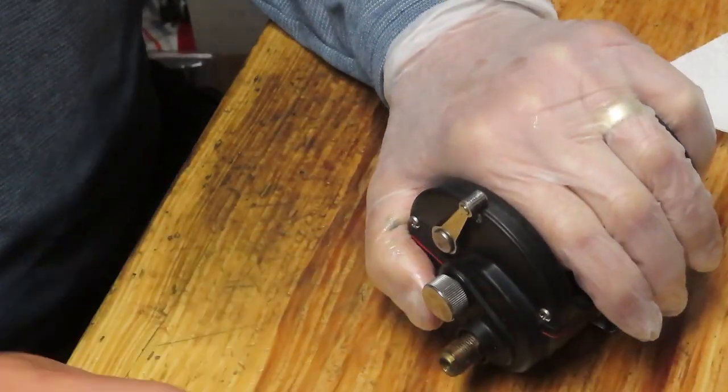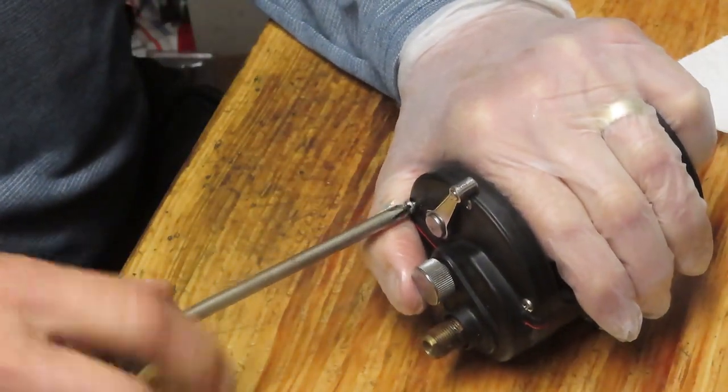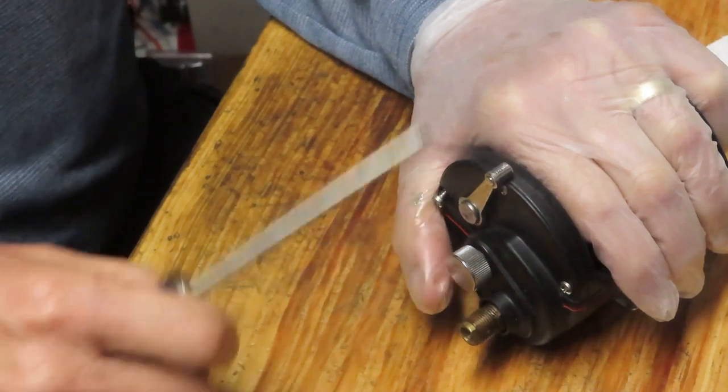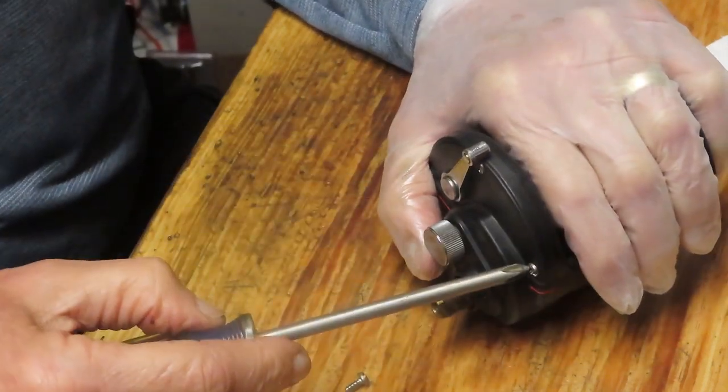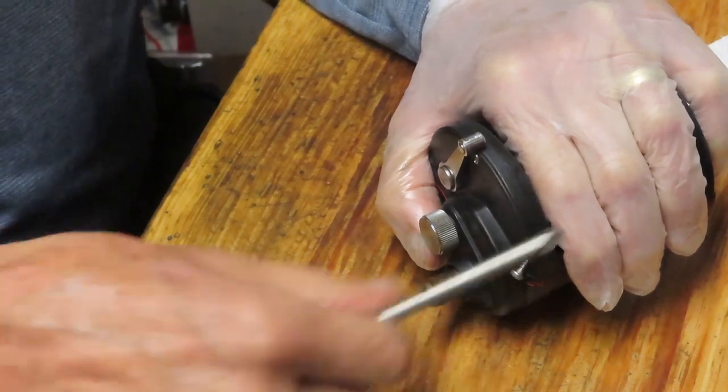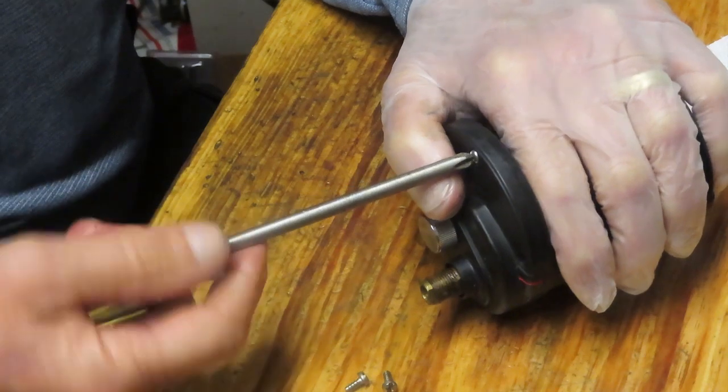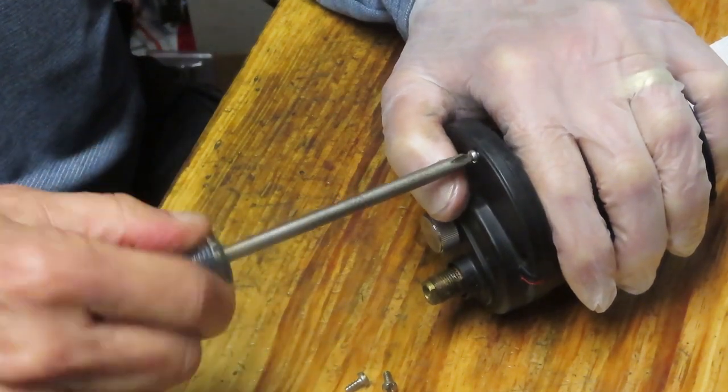You're going to notice that we have four screws that are holding the side plate on. We're going to take those four off. Sometimes these come out. These have got that funky screw, but I think we can get these off with the Phillips head screwdriver.